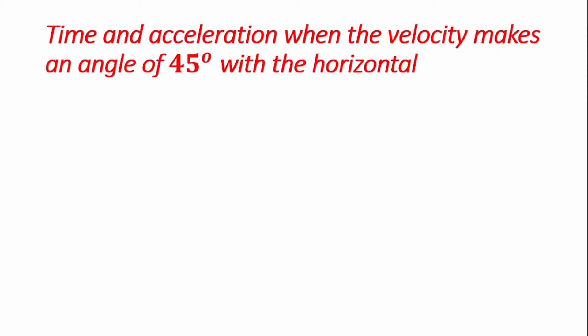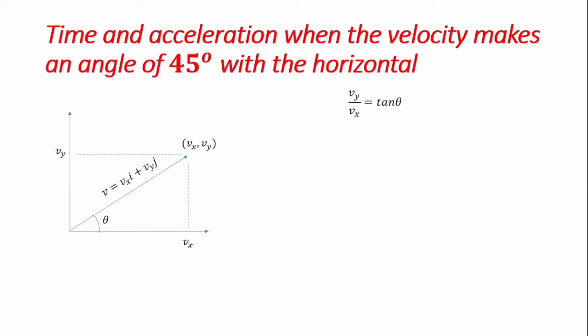The next part of the question requires us to find the time and acceleration when the velocity makes an angle of 45 degrees with the horizontal. We introduce our coordinate system and note that the velocity makes an angle theta. The components Vx and Vy from our velocity equation satisfy tan(theta) = Vx/Vy. For theta = 45 degrees, tan(45°) = 1, so we need the condition where Vx/Vy equals one.